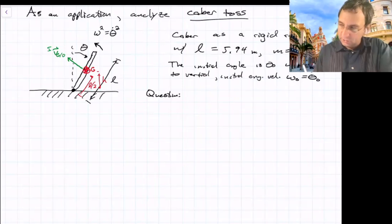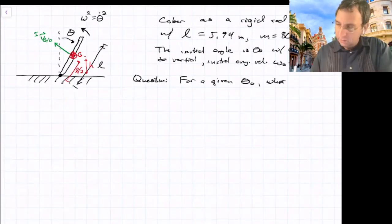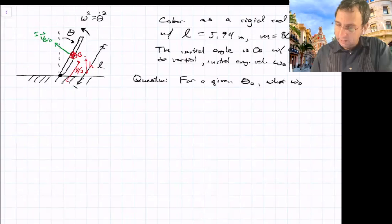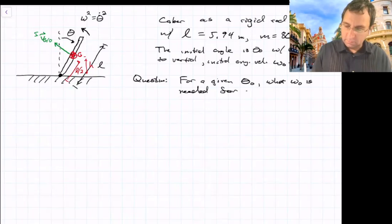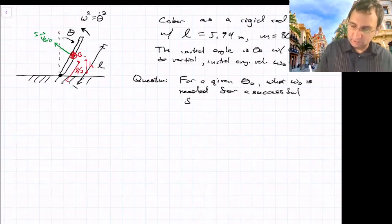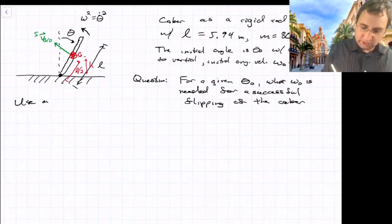The question is, for a given initial angle, what initial angular velocity is needed for a successful toss? A successful toss means that it can just barely make it over the vertical position and then it falls over. Or a successful, I guess we could call it flipping of the caber. And we will use an energy approach.